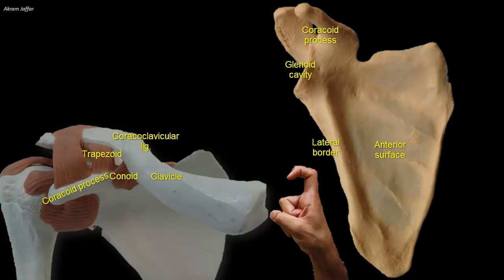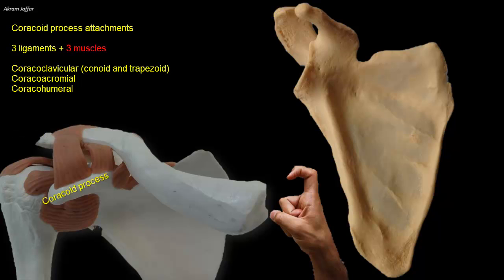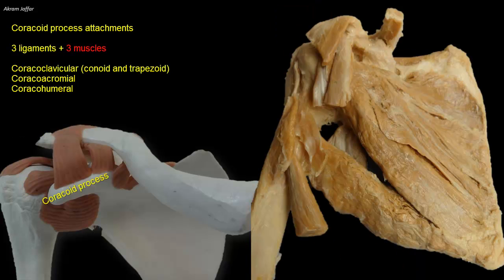Apart from the coracoclavicular ligament, the coracoid process provides attachment for two other ligaments: the coracoacromial ligament between the coracoid and acromion process, and the coracohumeral ligament, which fuses with the capsule of the shoulder joint. The coracoid process also provides attachment for three muscles.